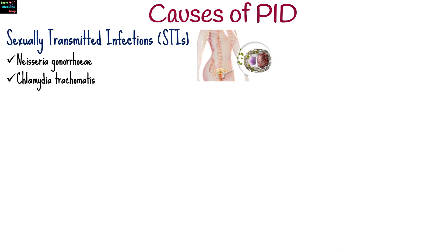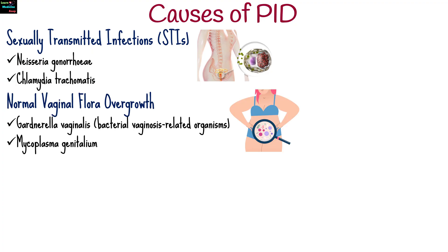PID is usually caused by bacterial infections, often transmitted sexually. The most common pathogens include Neisseria gonorrhoeae and Chlamydia trachomatis, as well as normal vaginal flora overgrowth such as Gardnerella vaginalis and Mycoplasma genitalium.